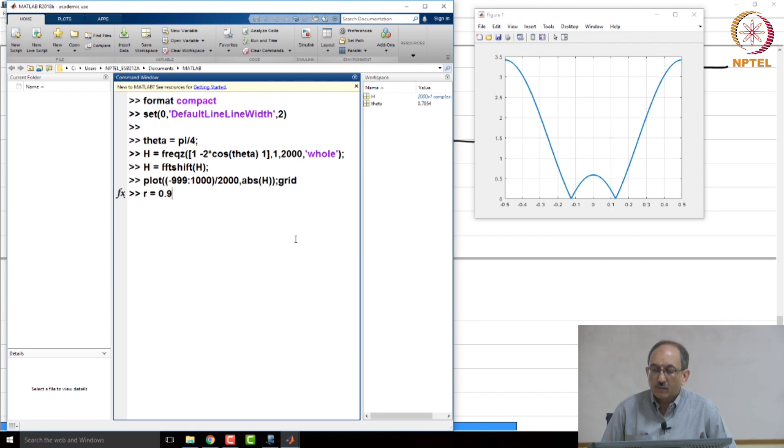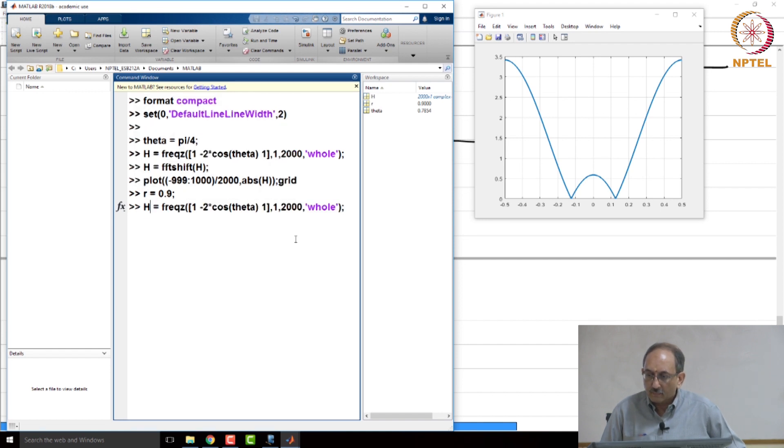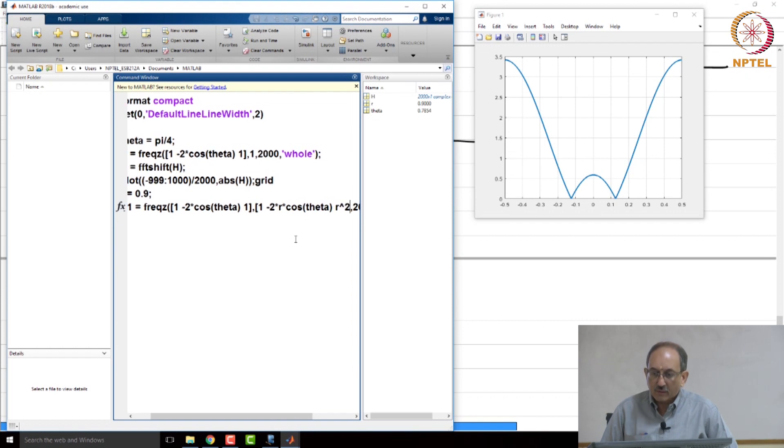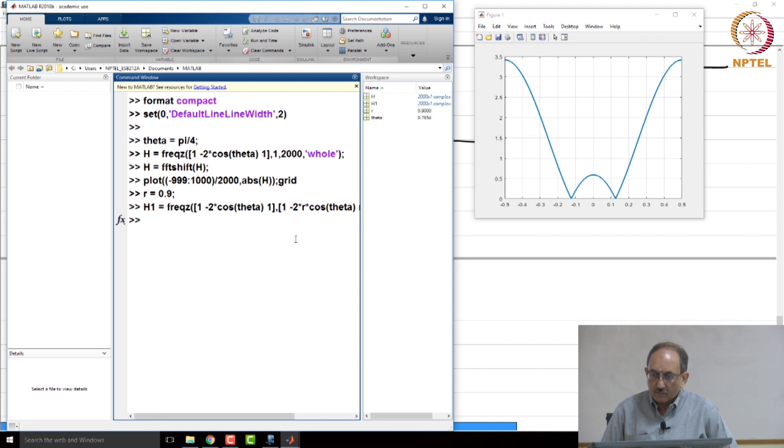Now, let us make the pole to be 0.9. So, the numerator stays as it is, the denominator is now 1 minus 2 r cos theta plus r square z to the minus 2. So, this is the denominator. So, denominator has now been, it is not just one, it is now the pole set r e to the plus or minus j theta where r is 0.9.